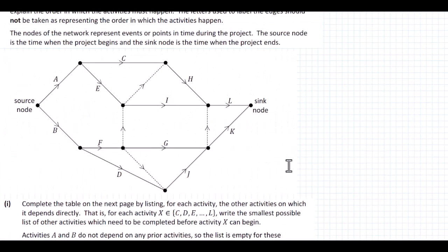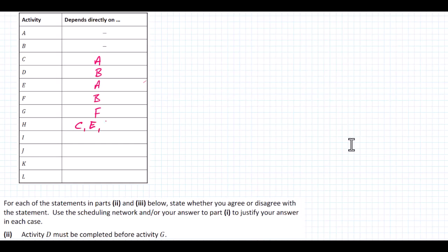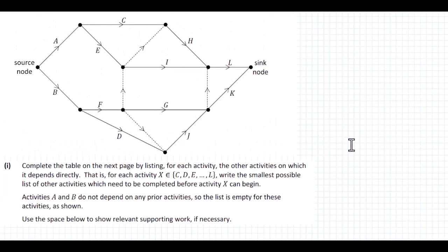Looking at H — H depends on C being completed. Because we have this dotted line here, it also depends on E being completed. And because we have a dotted line down along here, it's also going to depend on F being completed as well. So H depends on C, E, and F. I is next — I is dependent on E, and also because we have this dotted line down along here, it's going to be dependent on F as well. So I is dependent on E and F.